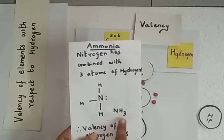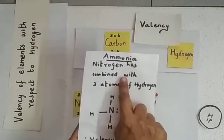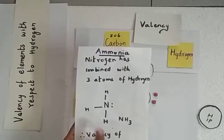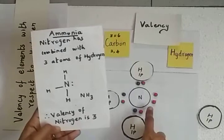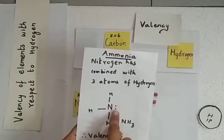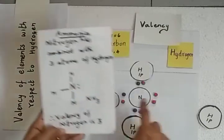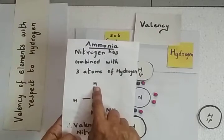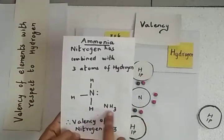The molecule is written as NH₃, with 3 atoms of hydrogen written as a subscript. Nitrogen has combined with 3 atoms of hydrogen, so the valency of nitrogen is 3. There is one lone pair of electrons remaining, and the 3 bonds formed are each represented as a single bond — 2 shared electrons per bond — giving 3 single bonds in the ammonia molecule.